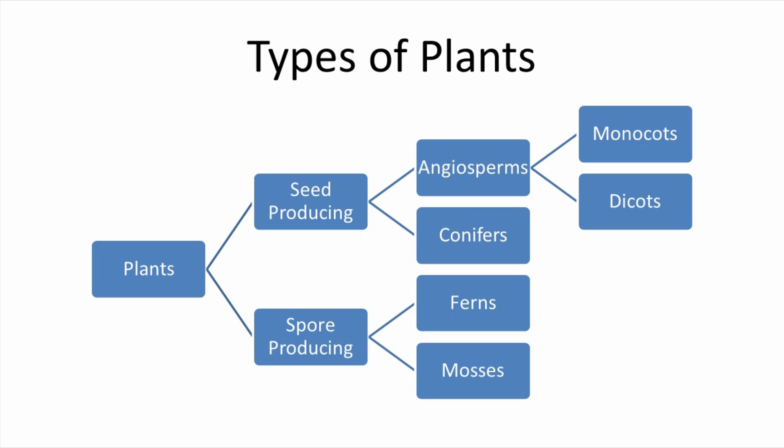In summary, plants can be classified in many ways. In the classification system we just skimmed through, we separated the seed-producing plants from the spore-producing plants. We then gave a cursory overview of mosses, ferns, conifers, and angiosperms, and how the flowering plants are divided into those which are broadleafed and those that are grass-like. Now I want to switch gears and talk about another way we can describe the different types of plants.